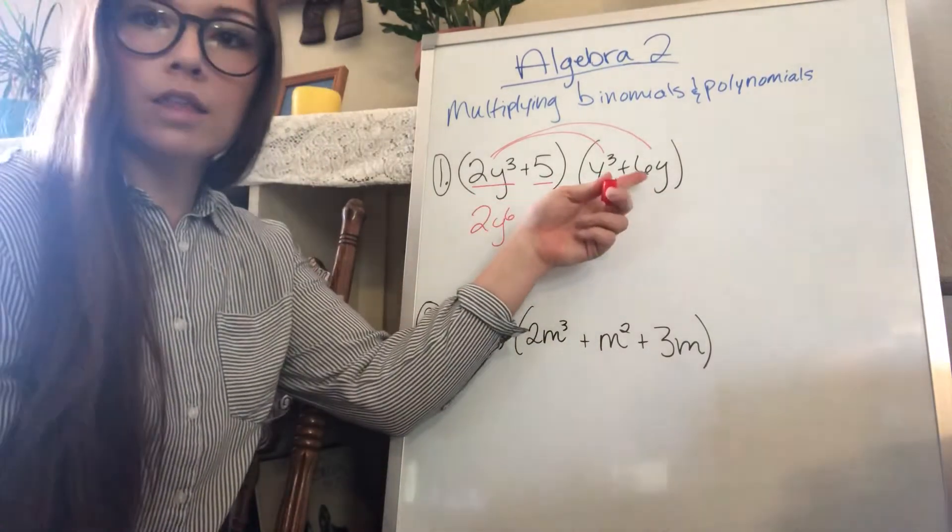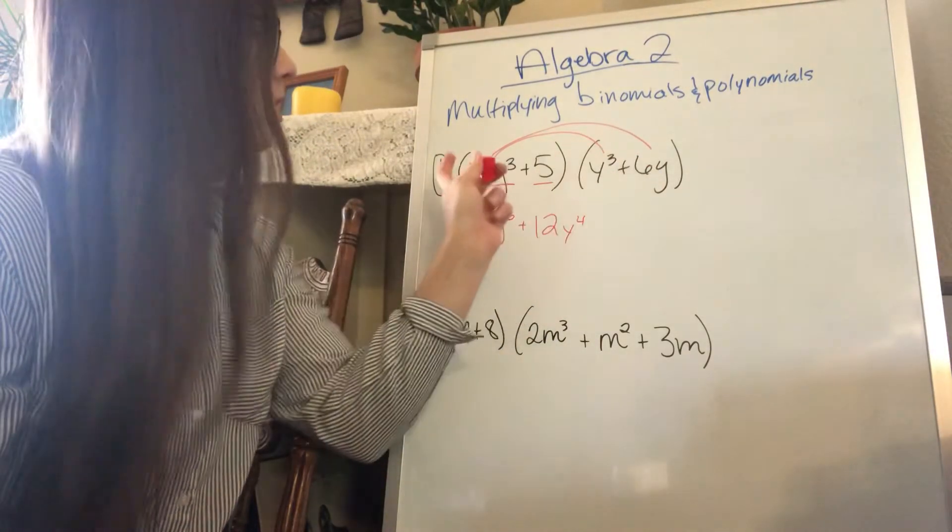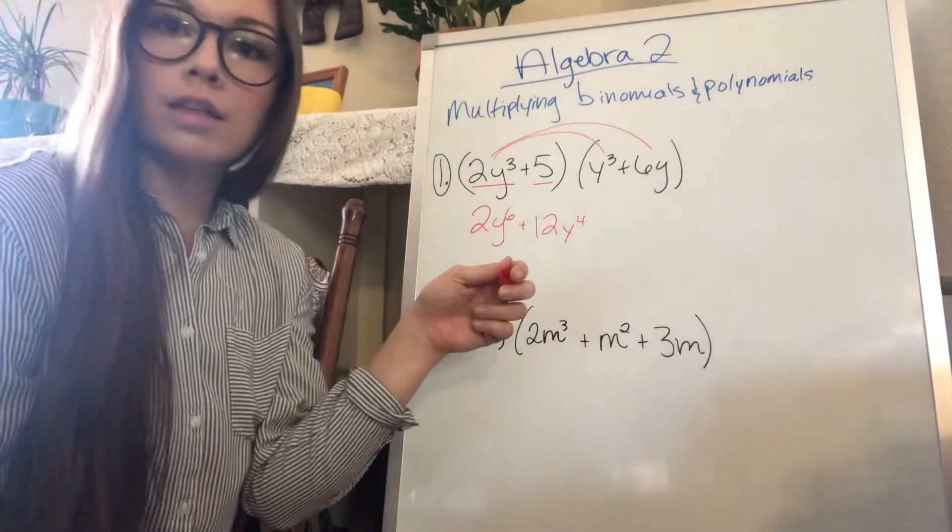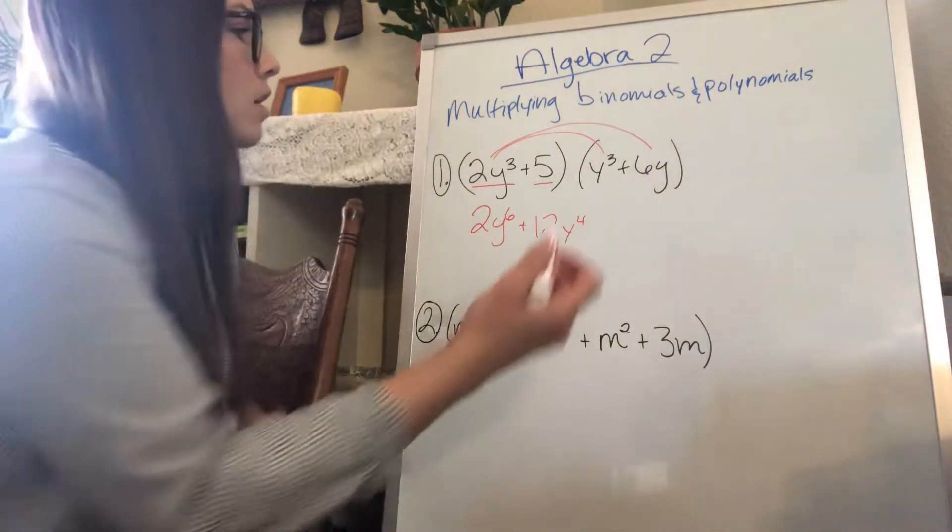And then 2y cubed times 6y is going to be a positive 12y to the 4th, right? Because y cubed and y, there's an invisible 1 there. So y cubed times y is y to the 4th.